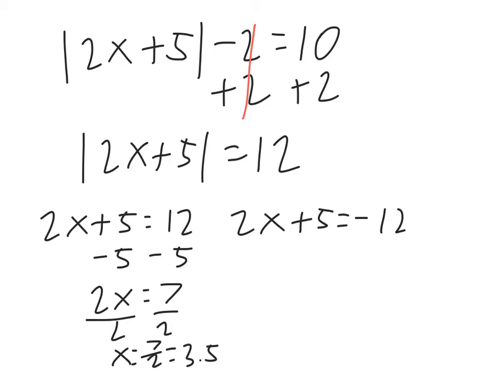Do the same thing on the other side. Subtract 5, and you're left with 2x equals negative 17. Divide both sides by 2, and you have x equals negative 17 over 2, or negative 8.5. Again, the fractions are fine to leave as an answer.